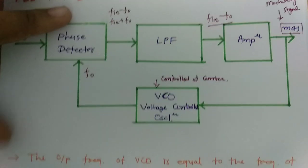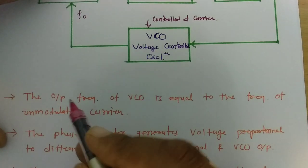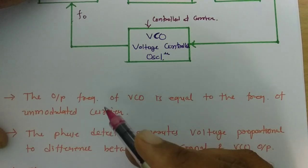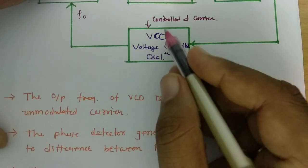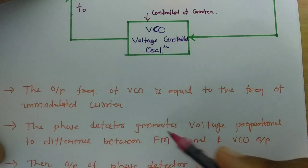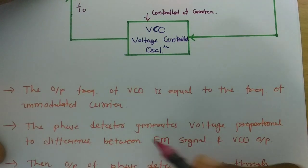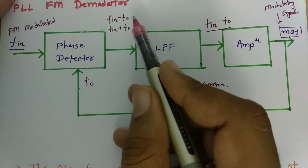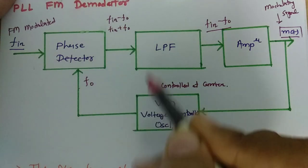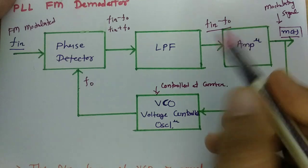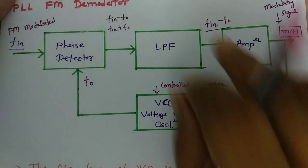The output frequency of the VCO equals the frequency of the unmodulated carrier, so it is locked at the carrier. The phase detector generates a voltage proportional to the difference between the FM signal and the VCO output, giving components F_in minus F0 and F_in plus F0. After the low pass filter, we get F_in minus F0, focusing on that difference.